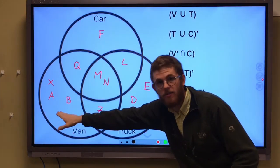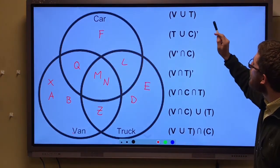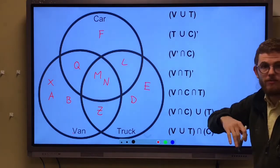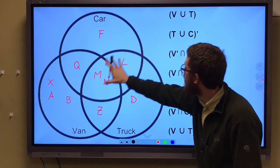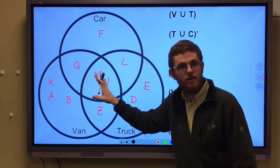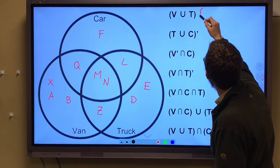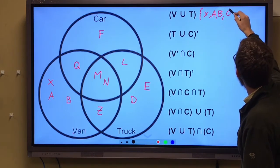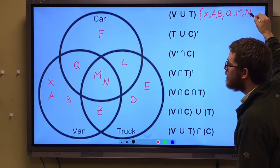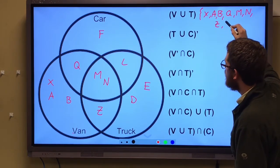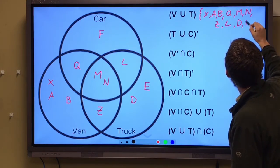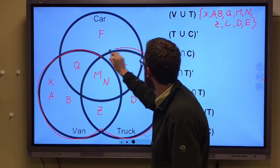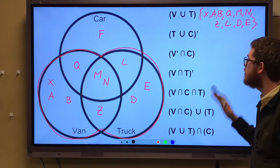Over here these people just have a van in their driveway and so on. So what is the union of V and T? All the students that have vans and trucks in their driveway. Well that would be everything that's in the truck and the van circle. So that would be the set of X, A, B, Q, M, N, Z, L, D, and E. All of this stuff right here. Essentially everyone but Frank was included in this.